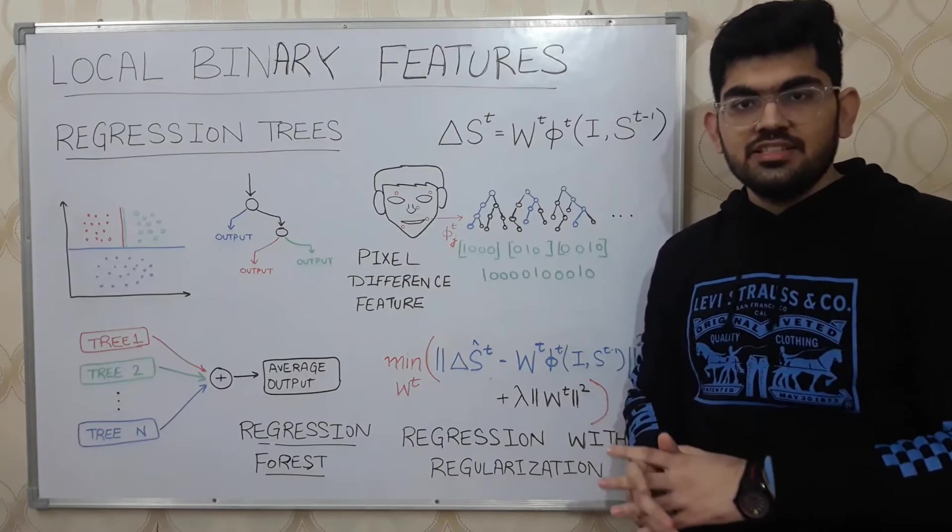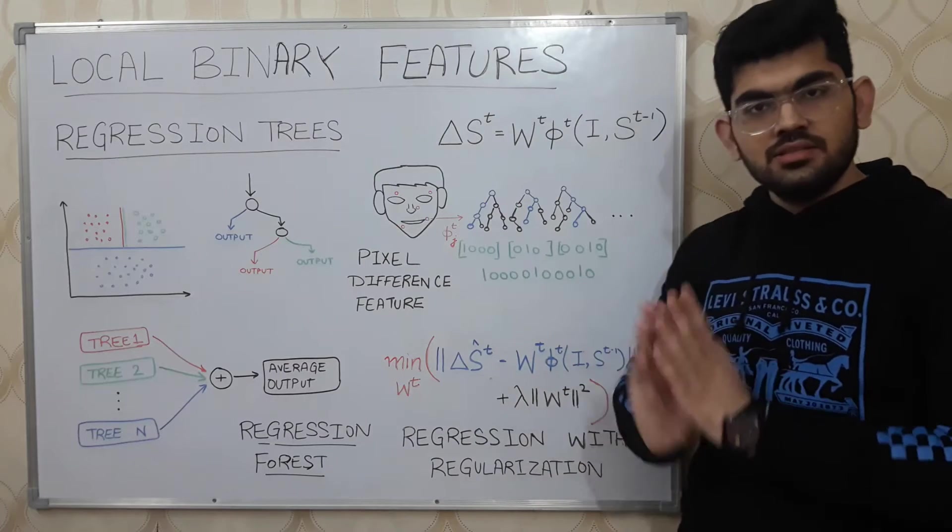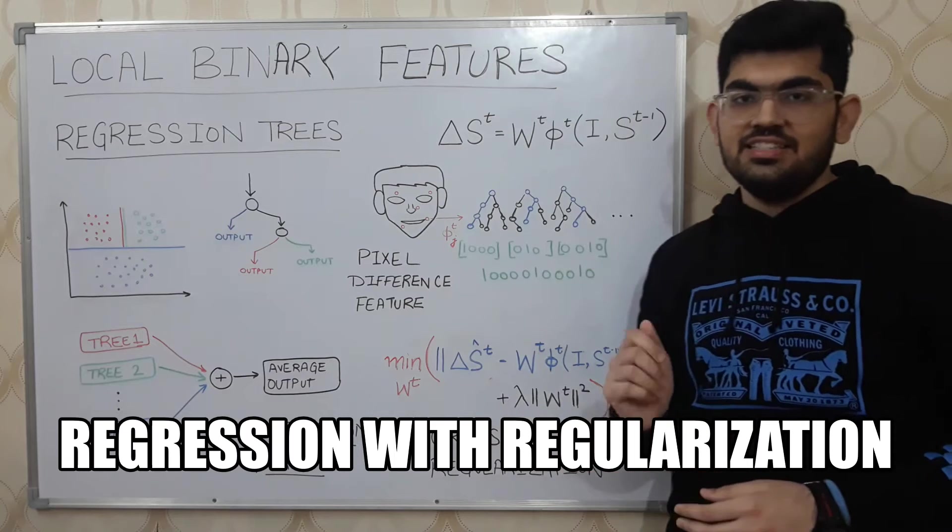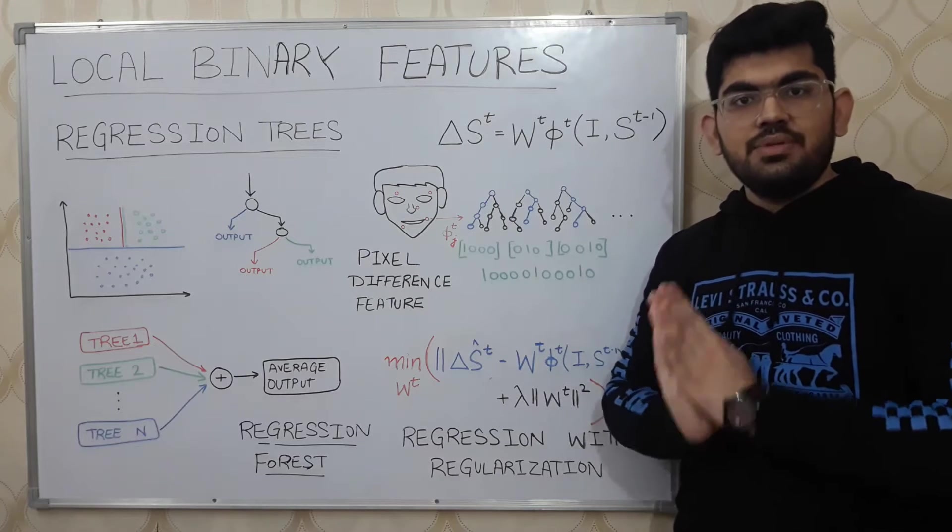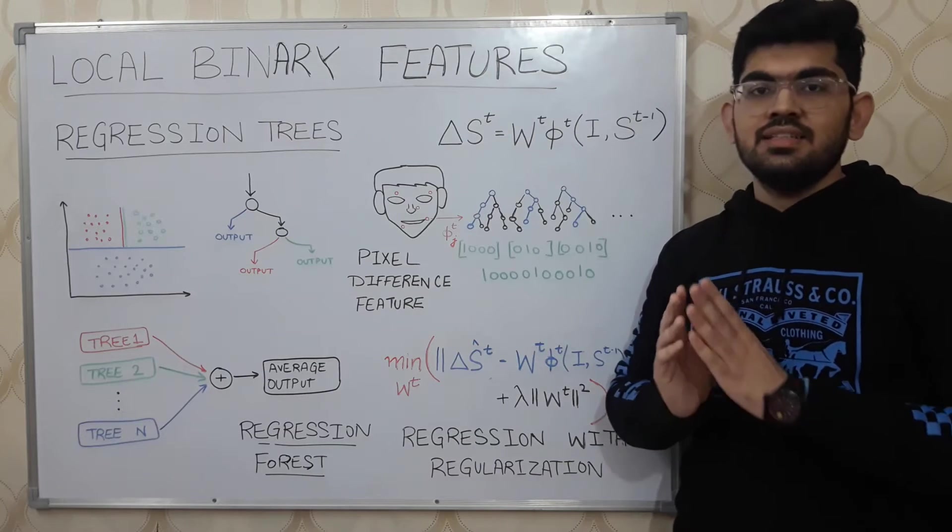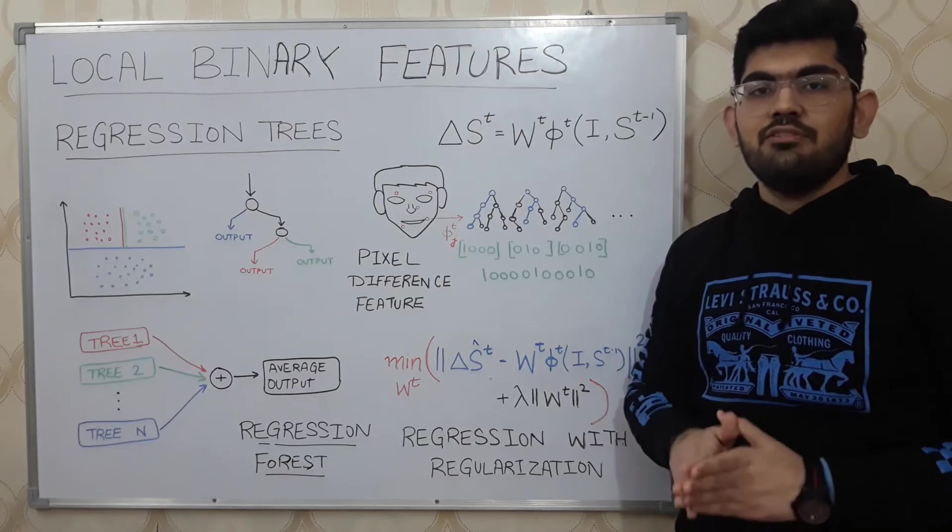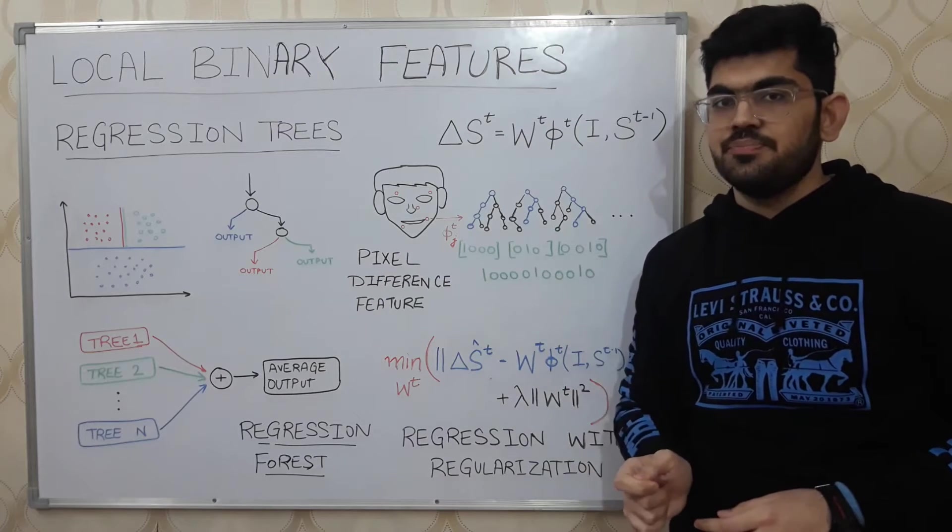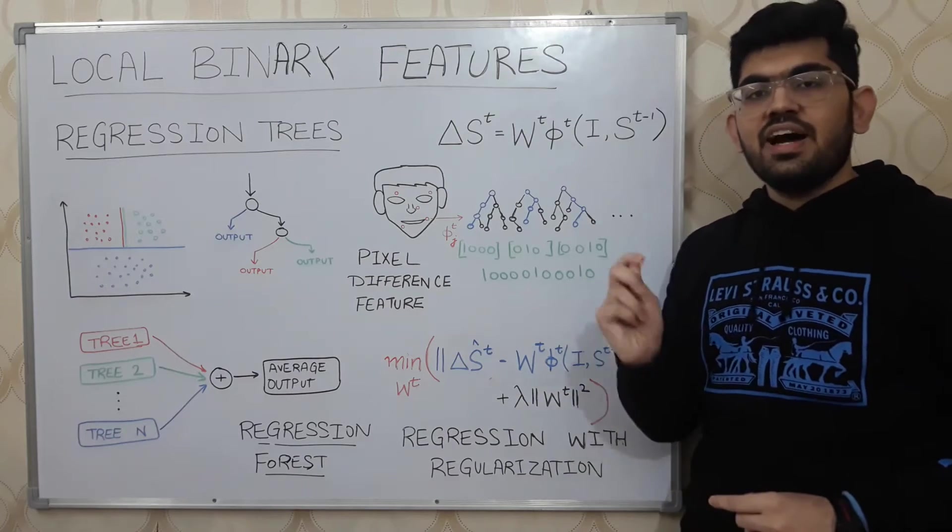This regularization term discourages Wt to learn some specific values and instead learn general values. And this kind of regression with the regularization term is called regression with regularization. During real-time testing, Wt matrix is easy to compute since we only have to take a matrix multiplication.